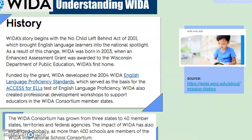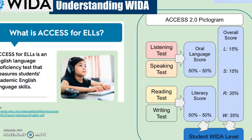It started with the No Child Left Behind Act of 2001. At that time, the University of Wisconsin received a grant to develop English language proficiency standards, and those are the basis for the ACCESS test, which our ELS take every year. The test is just one piece of the data, and we do this test in January through March.